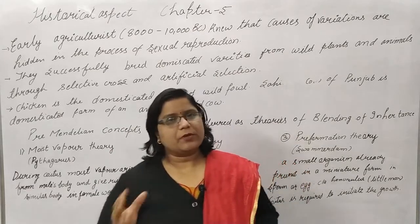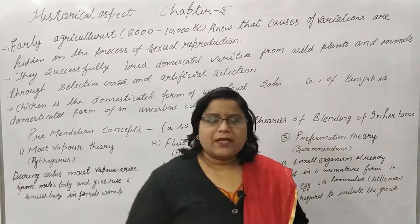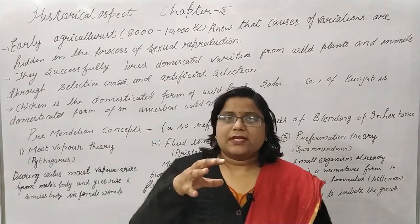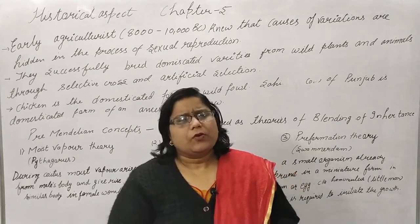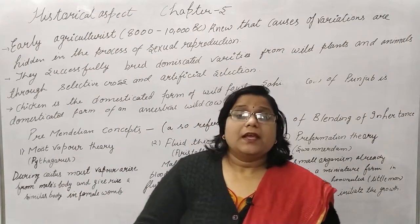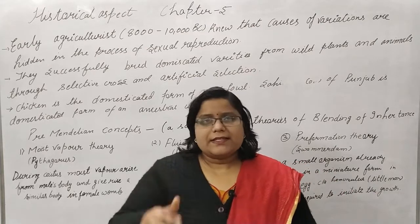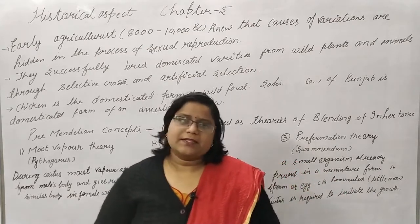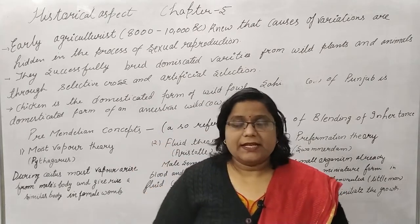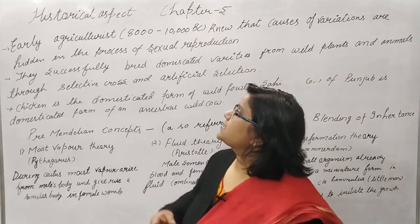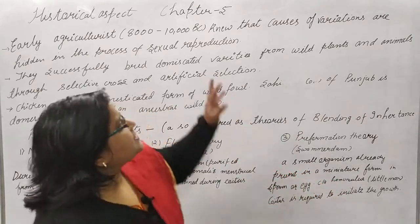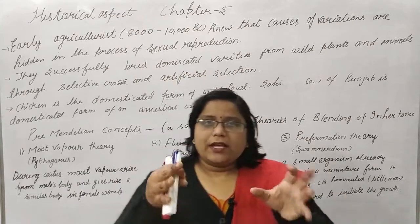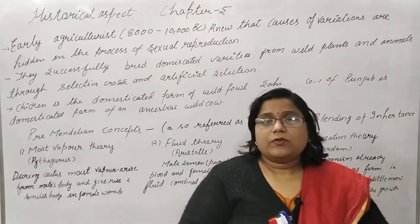We have studied some terminology in chapter 5 about what Mendel used — what is homozygous, what is heterozygous — we have studied some basic things. But before coming to Mendel, we need to study some of these things because there are many questions in it. Let's discuss the historical aspects — how Mendel's theory reached its place and what happened before.